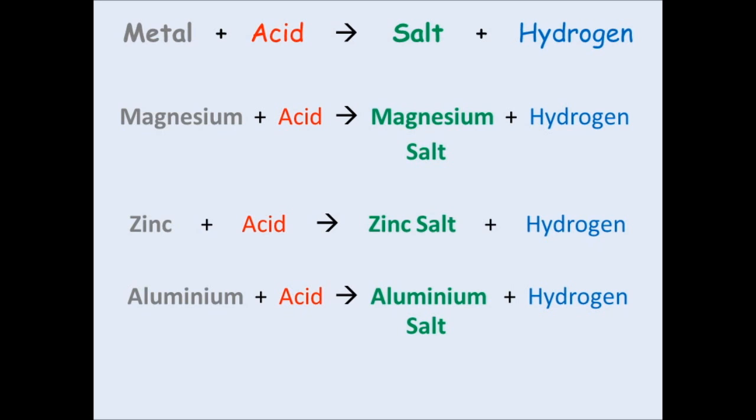Now the first one, if we react magnesium with an acid, you get what's called the magnesium salt. So the magnesium, the metal, is joined to something else, which will be a non-metal. Therefore you get a magnesium salt.